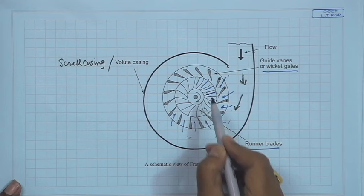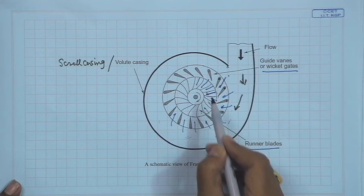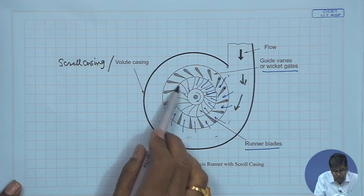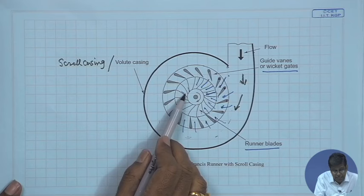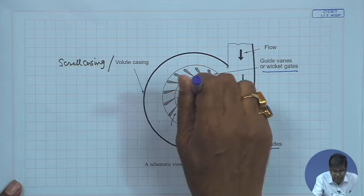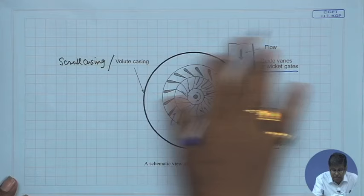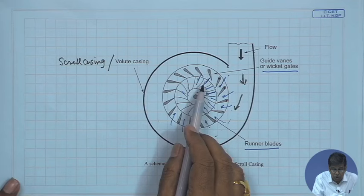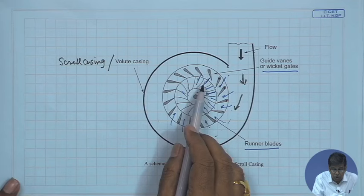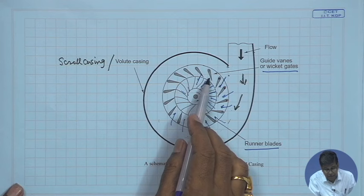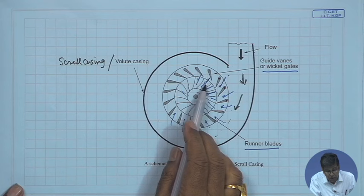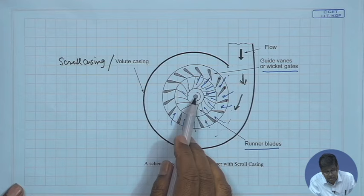At the inlet of the runner, the fluid has high velocity and high pressure, and it is an inward flow. The flow passages of the runner blades are also converging. As the fluid flows through the runner blade, by impulse action its velocity is reduced and its pressure is also reduced. Finally, at the outlet of the runner, the flow is turned to the axial direction.